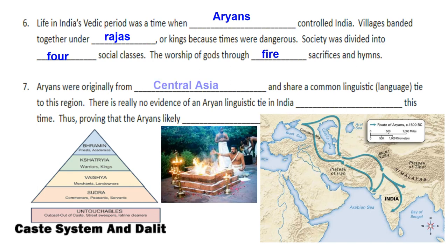Aryans, which were a group of people from Central Asia, shared a common linguistic — or language — tie to this region of Central Asia, which would be kind of the land around the Caspian and the Black Sea. Over time, researchers found there was no evidence of a common linguistic tie to India before this period of time, and thus it has led researchers to believe that the Aryans probably migrated out of Central Asia into the subcontinent, into India.